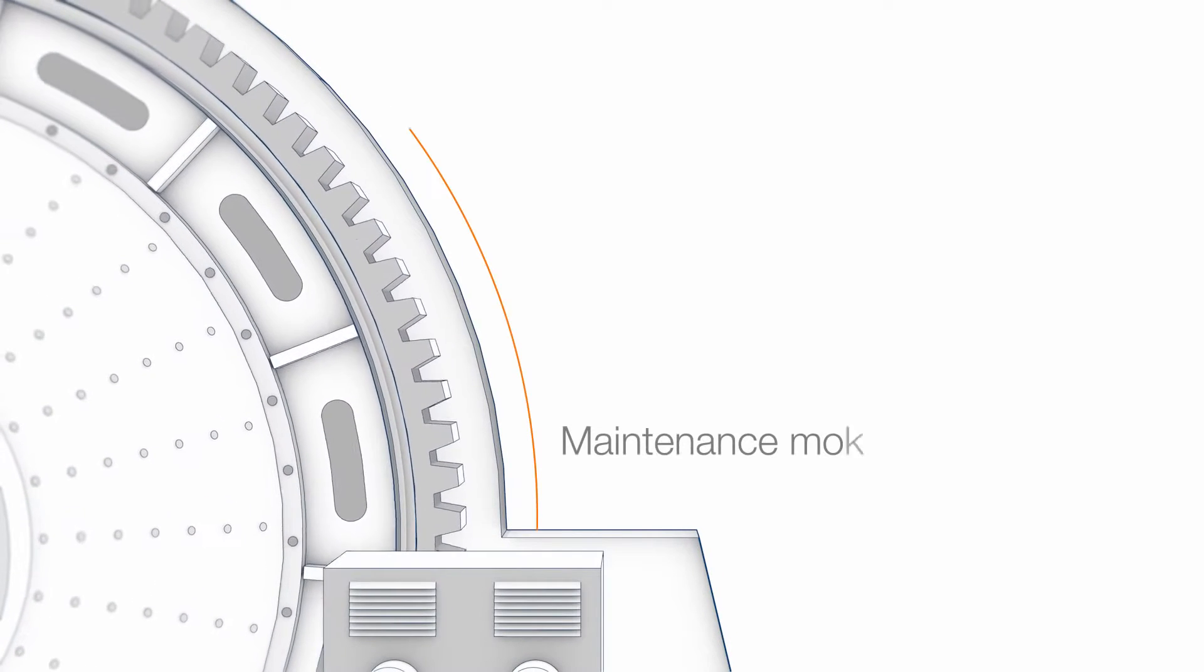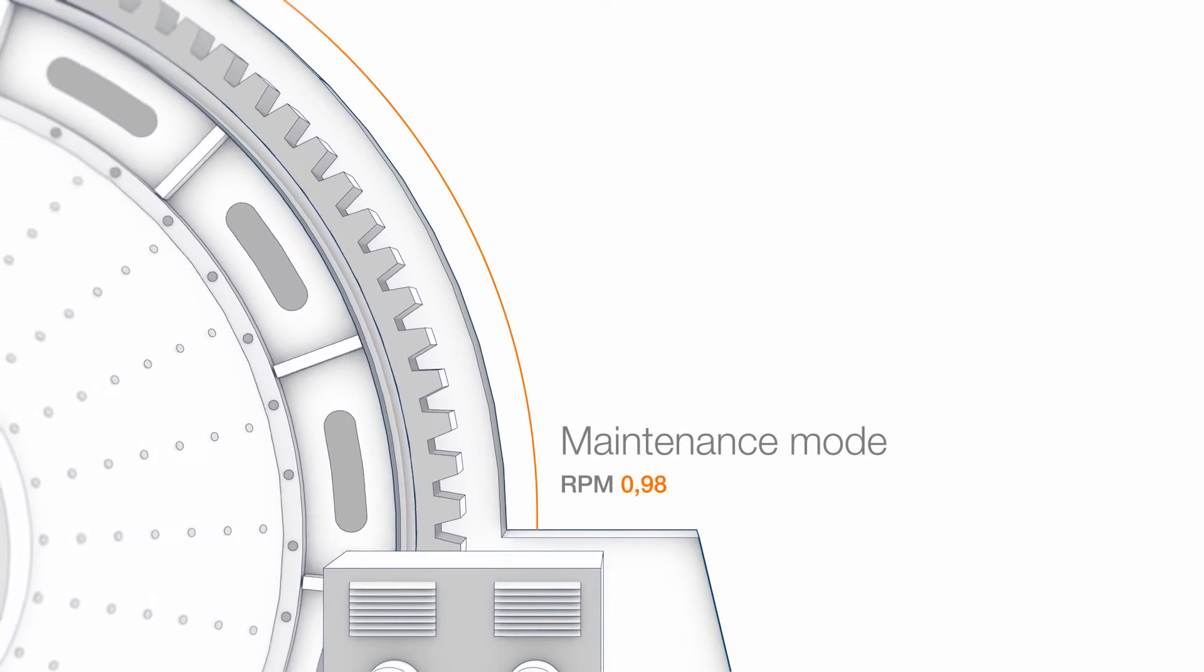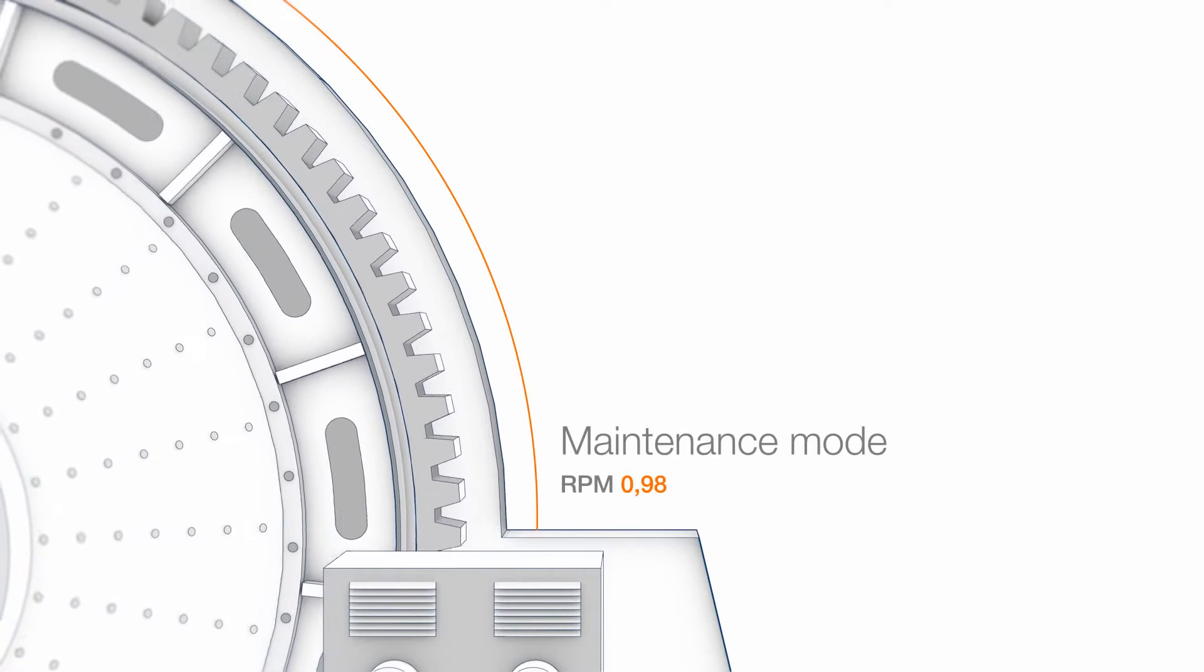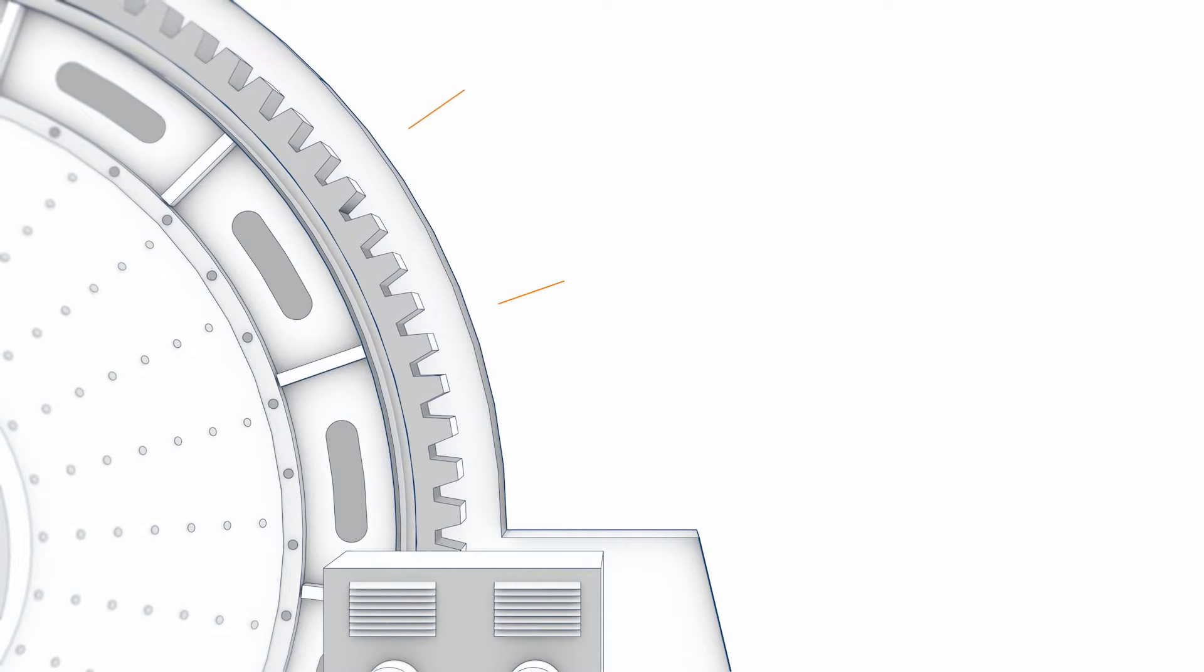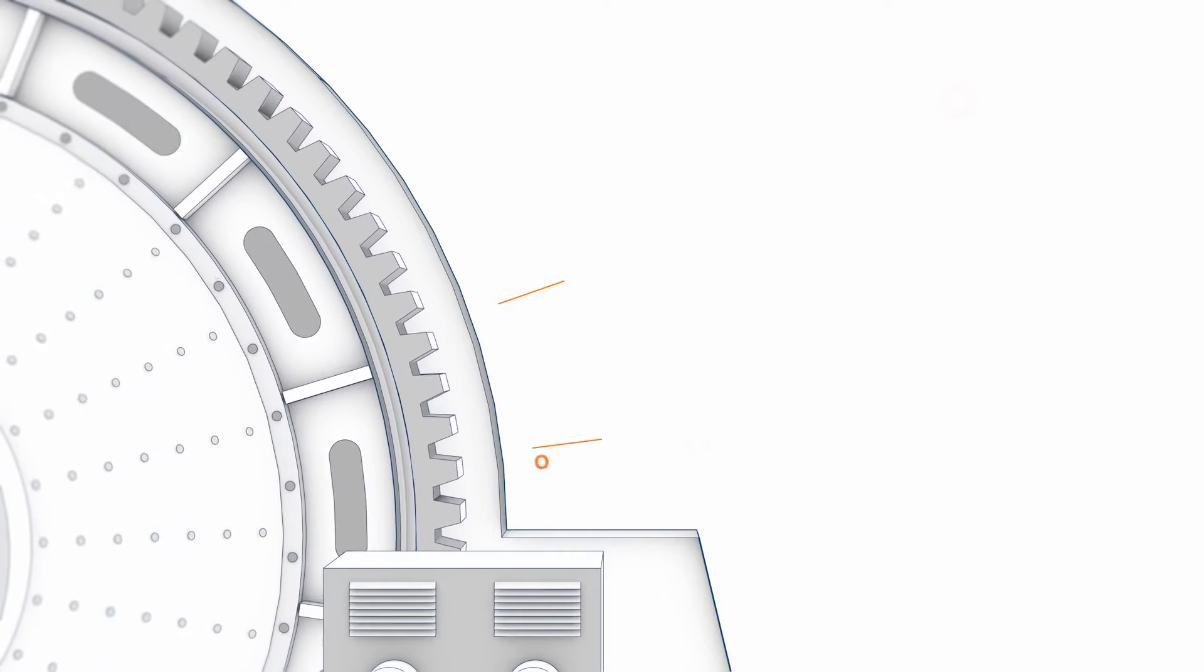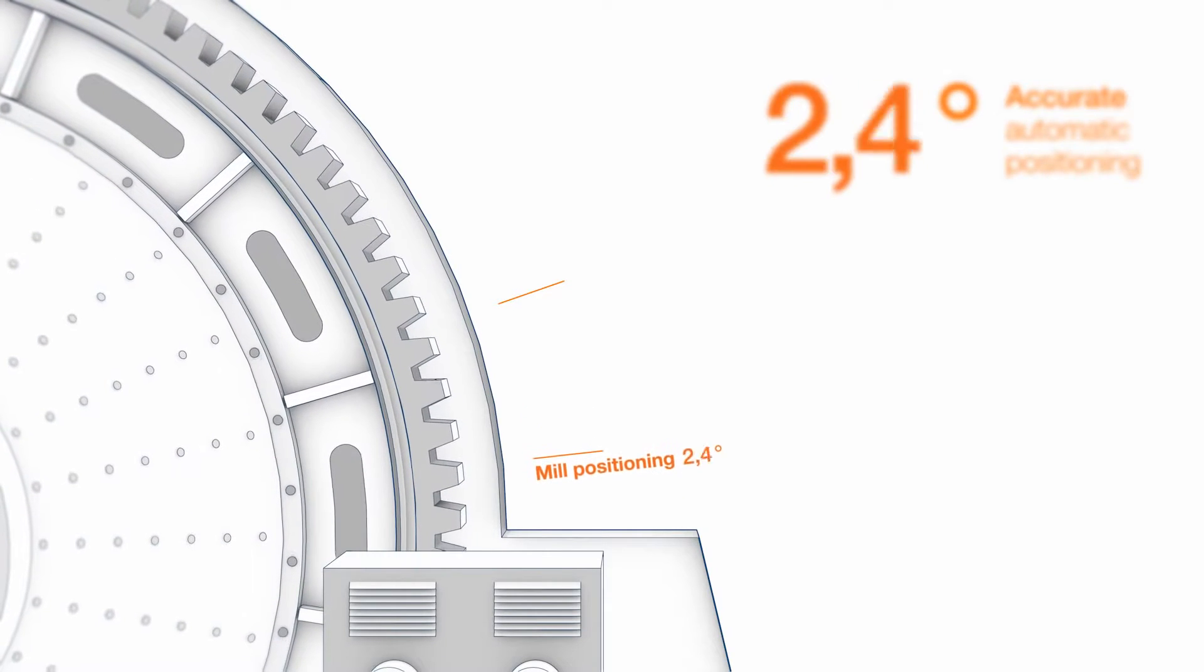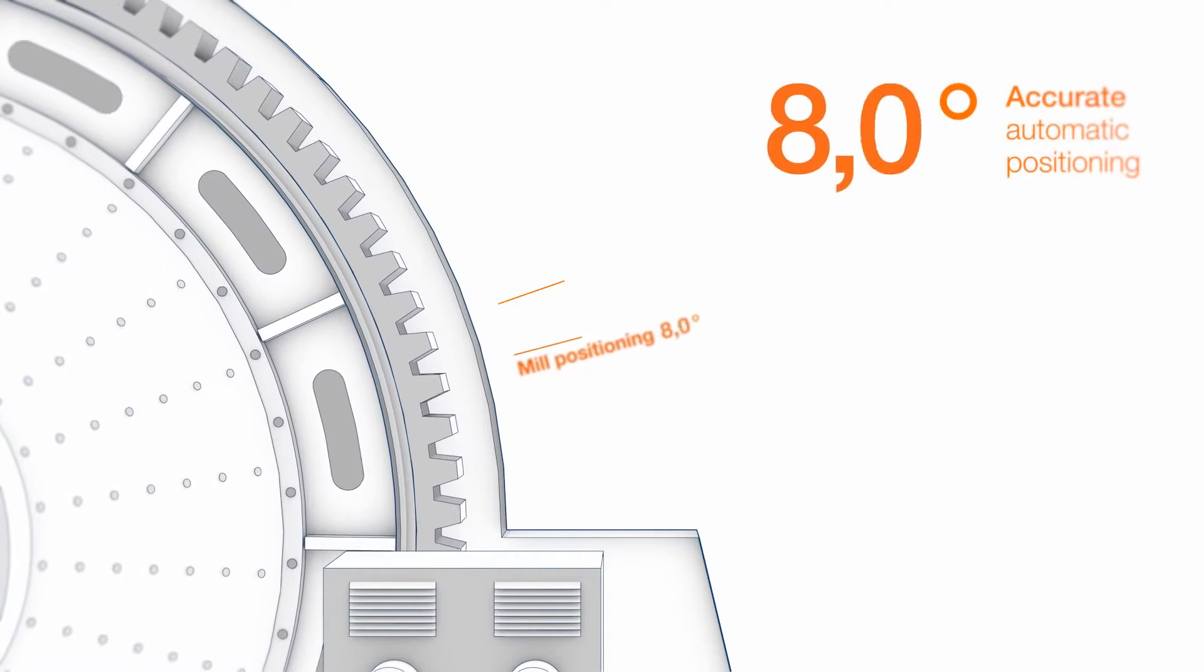The variable speed RMD solution allows for easy maintenance and reduces downtime without the need for an additional inching drive. In addition, the mill local control panel can be used to rotate the mill to the exact orientation necessary for maintenance, such as replacement of liners.